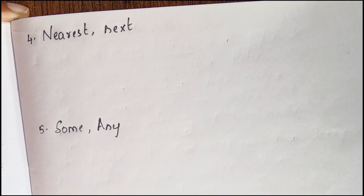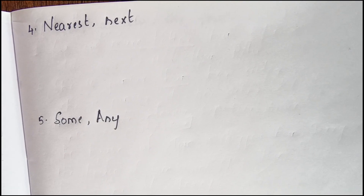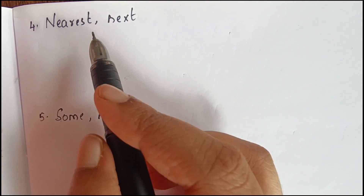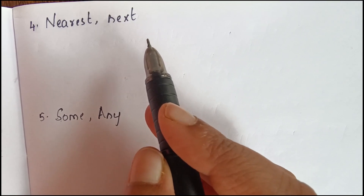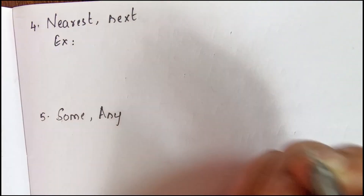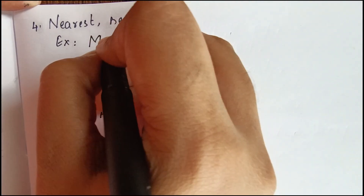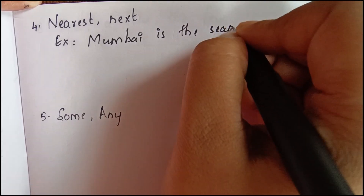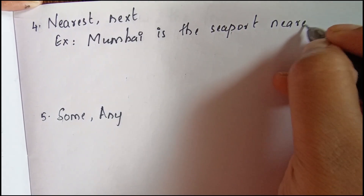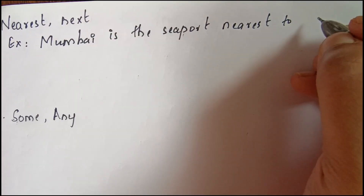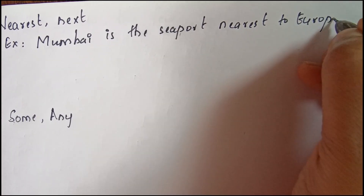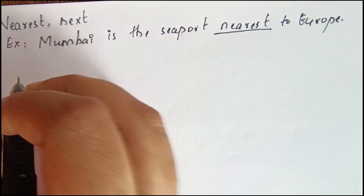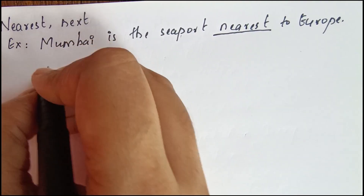Next is nearest and next. Nearest means the shortest distance away, while next refers to one in a sequence of things coming one after the other. For example: 'Mumbai is the seaport nearest to Europe' — nearest is used to indicate the shortest distance away.